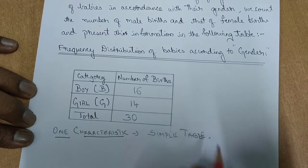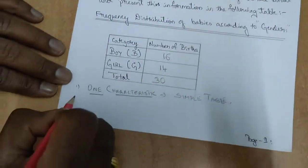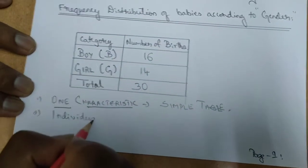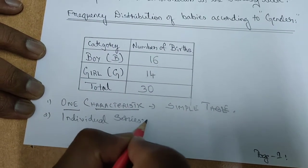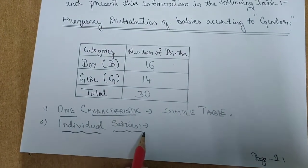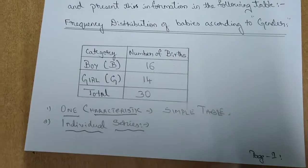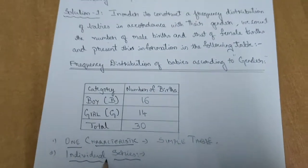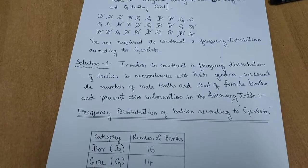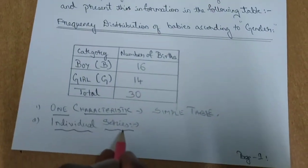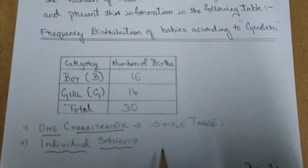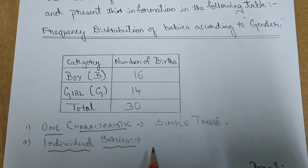Further, a second point to be noted is that this is an individual series. It is an individual series because we are talking only about one particular characteristic and that is a fixed number. In the next problem let us discuss about discrete series, and further in the third question we will discuss about continuous series.